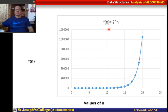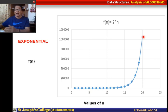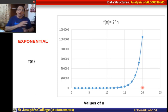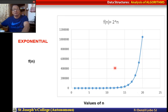Then we have f(n) = 2ⁿ, called the exponential equation. Initially the value of f(n) is small, but as n increases it suddenly shoots up — from around 100 or 200 up to some 10 lakhs when n reaches about 19 or 20. We express the behaviour and complexity of algorithms in terms of these functions, which is called asymptotic analysis.